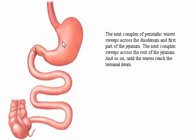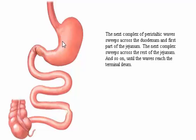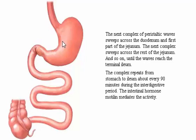The next complex of peristaltic waves sweeps across the duodenum and first part of the jejunum. The next complex sweeps across the rest of the jejunum, and so on, until the waves reach the terminal ileum. The complex repeats from stomach to ileum about every 90 minutes during the interdigestive period.